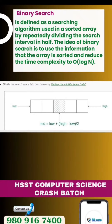What is binary search? It is a searching algorithm used in sorted arrays by repeatedly dividing the search interval in half. The idea behind binary search is to use the information that the array is sorted and reduce the time complexity to O(log N).